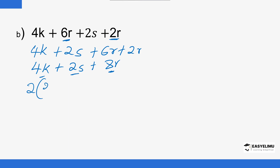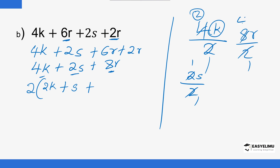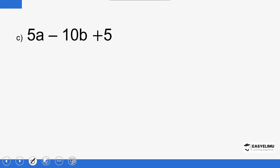Dividing each term by 2: 4k divided by 2 gives 2k, 2s divided by 2 gives s, and 8r divided by 2 gives 4r. So this simplifies into 2 into (2k + s + 4r). There is a bracket there — that is the simplest factorized form of this expression.